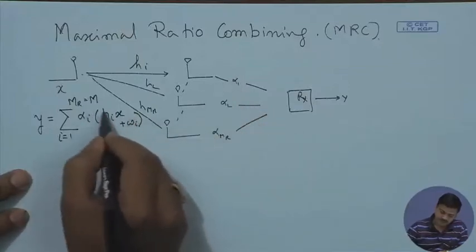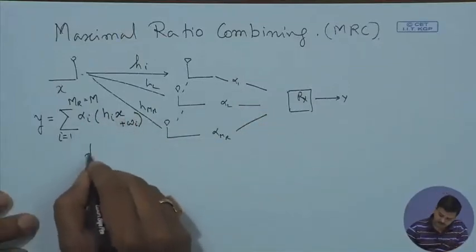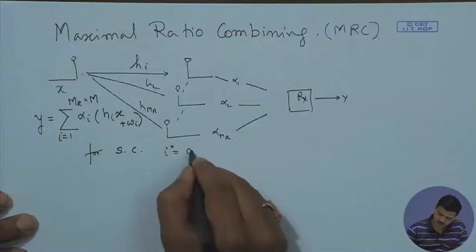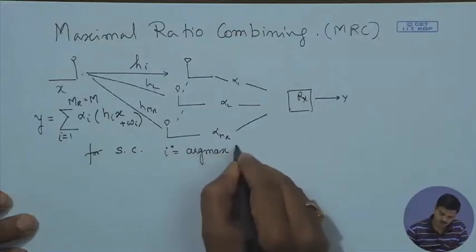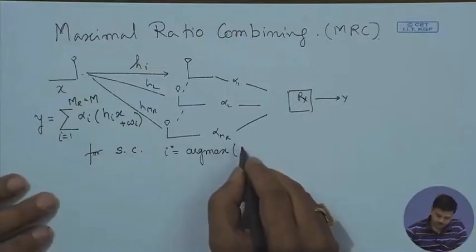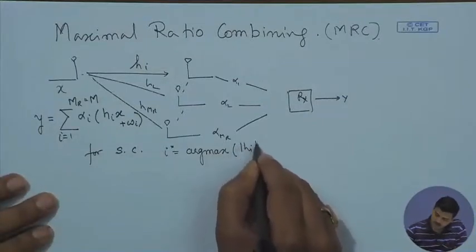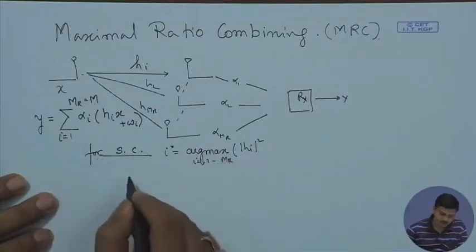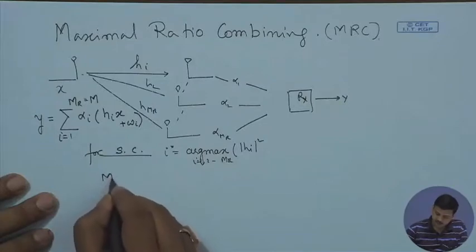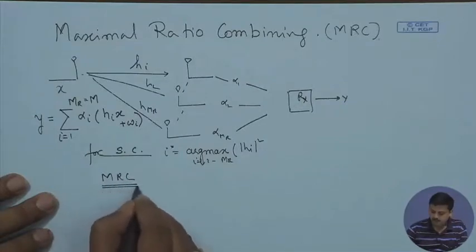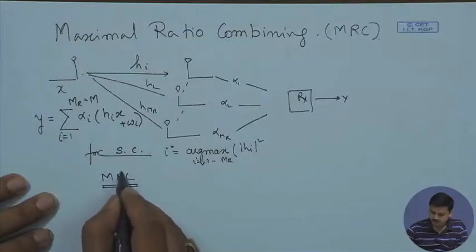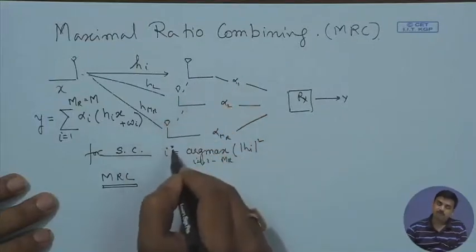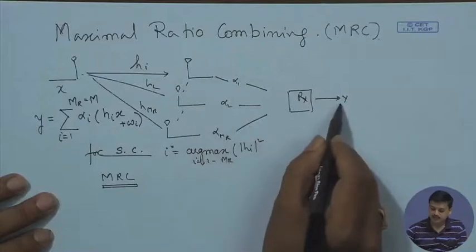This weight factor is multiplied with whatever is received. For selection combining, the combining was done by i* = argmax of gamma_i or argmax of |H_i|² for i equals 1 to MR. But for maximal ratio combining (MRC), we combine in a way from which this name is derived: we put the weight corresponding to the strength of each branch so that the overall SNR is maximized at the receiver.